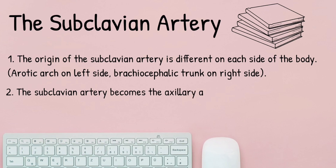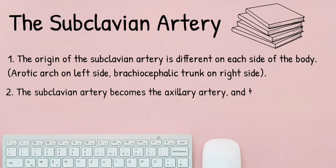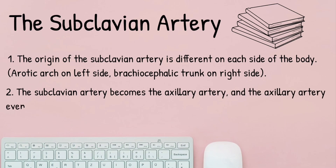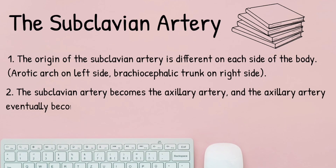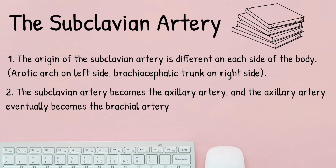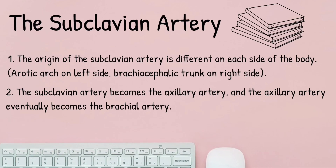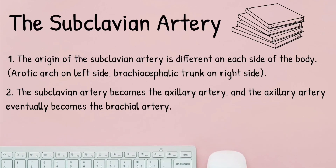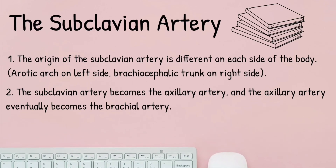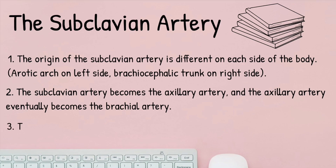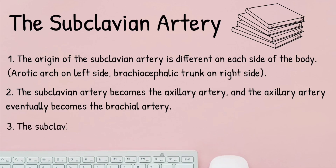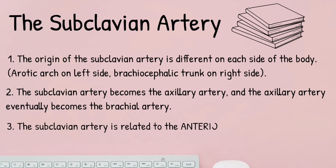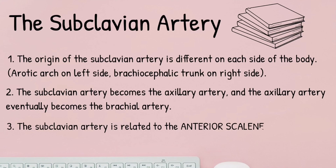The subclavian artery travels up and goes on to form the axillary artery around the area of the first rib, and then later goes on to become the brachial artery. If you want to find out more about the axillary artery, make sure to check out our last video for more information.